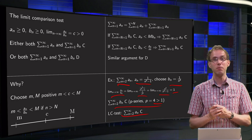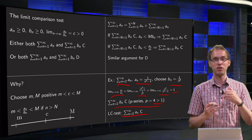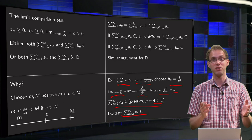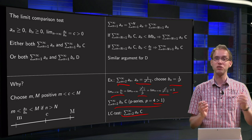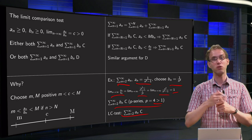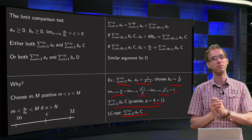So you see this limit comparison test — if it works, it works really fast, much faster than the integral test, and it tells you immediately whether your series converges or diverges.